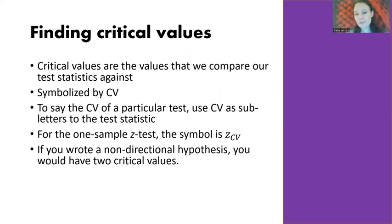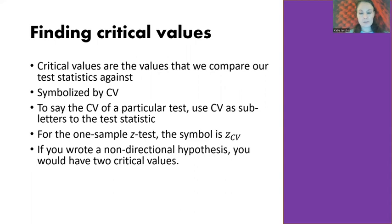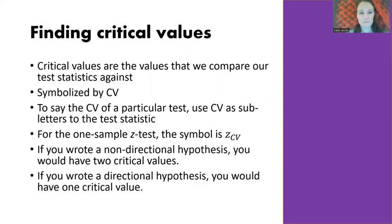If you wrote non-directional hypotheses, you'll have two critical values because you're running a two-tailed test. When talking about hypotheses, we say directional or non-directional; when talking about the test, we say one-tailed or two-tailed. If you wrote a directional hypothesis, you would have one critical value because you're running a one-tailed test.